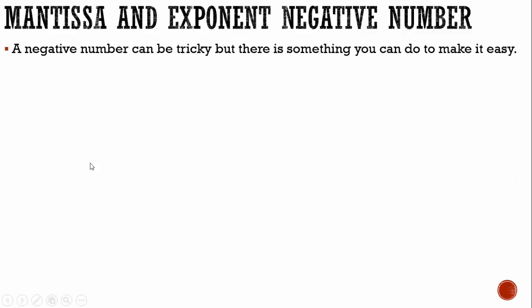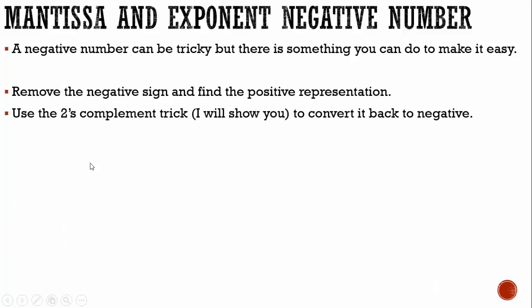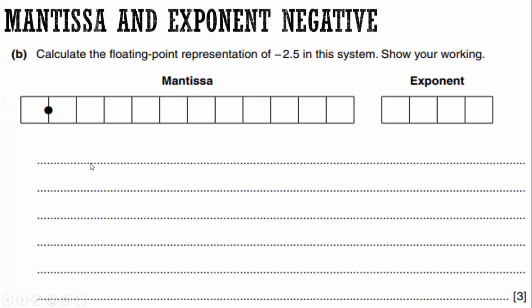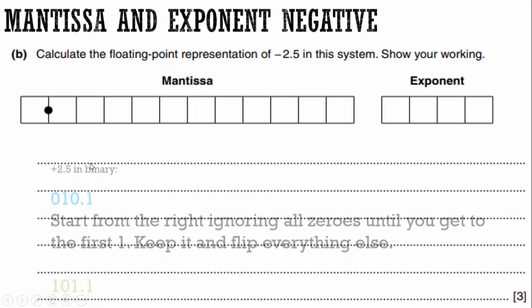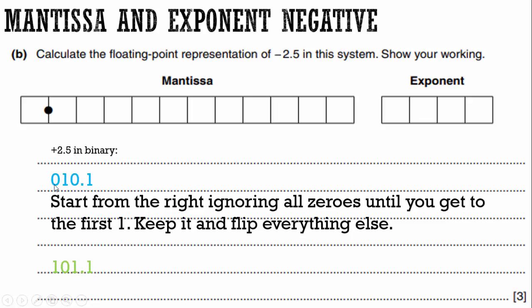Let's talk about negative numbers. So a negative number can be tricky, but there's something you can do to make it easy. And we went over this in the original video. All we need to do is remove the negative sign and find the positive representation. We use the two's complement trick, which I will show you, and we convert it back to negative. So let's take a look at this. Calculate the floating point representation of negative 2.5 in this system. Show your working. Not a problem. They just made it super easy for us because we need the positive representation of positive 2.5 so we can use the two's complement trick. So what we do is here's my positive 2.5 in binary. And here's the trick we do. We start from the far right. We ignore all zeros until we get to the first one. When we get to the first one, we keep it and we flip everything else.